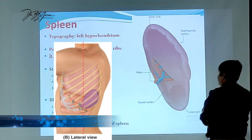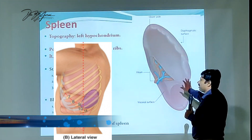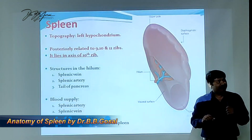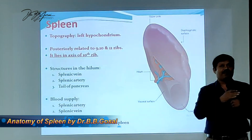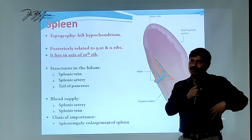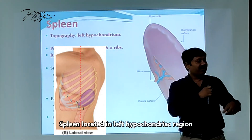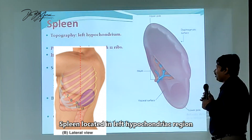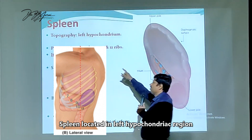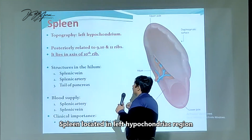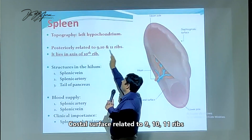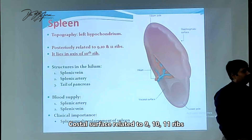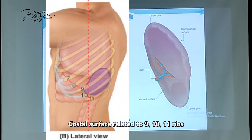This particular spleen is located in the left hypochondriac region. So the spleen is located in the left hypochondriac region. What is more important to know is the relation to the ribs — it is related to the 9th and 11th ribs.